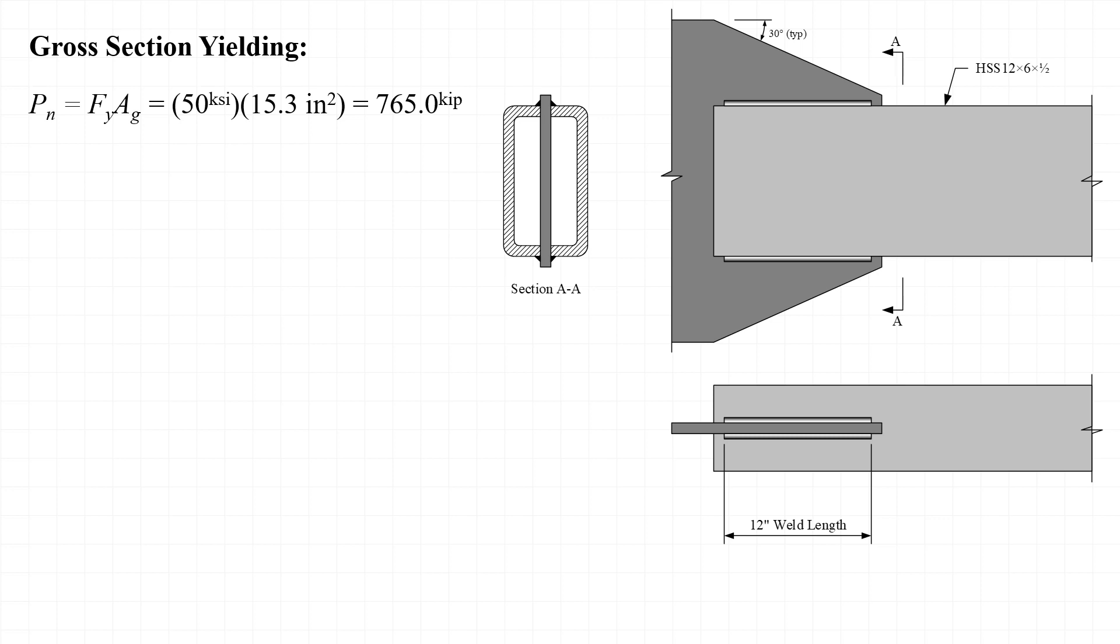Substituting in values for F sub y and A sub g, we find that the nominal strength is 765 Kips. Applying a resistance factor of 0.9 for gross yielding, we find that the design strength for gross section yielding is 688.5 Kips.